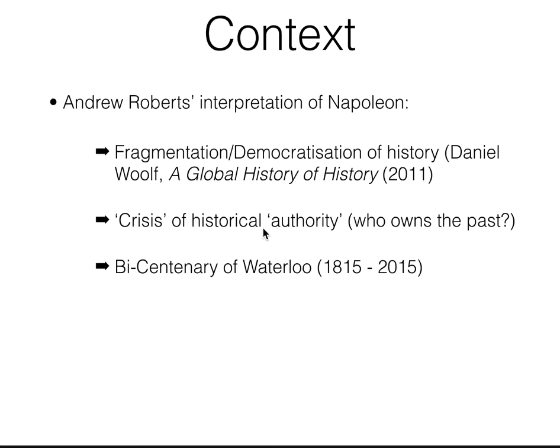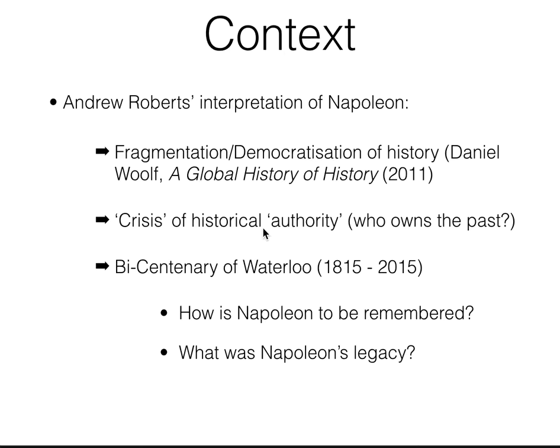The bicentenary of Waterloo raised a couple of questions that have always been there, bringing them right back to the surface with intense scrutiny — lots of articles in magazines, many books being published. How is Napoleon to be remembered? How are we going to represent that time? Do we represent it as positive or negative or something else? What was his legacy — a reforming legacy, an imperial legacy, or some complex mix of the two? How we're going to actually remember Napoleon is the big issue around the bicentenary.